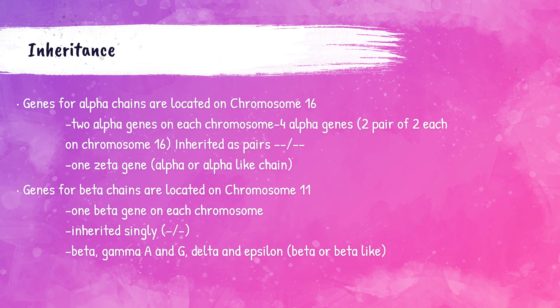There are alpha thalassemias, where the issue occurs on the alpha chain, and beta thalassemias, where the issue is on the beta chains. The genes for the alpha chains are located on chromosome number 16. There are two alpha genes on each chromosome, for a total of four alpha genes inherited as pairs. The genes for the beta chains are located on chromosome number 11, with one beta gene on each chromosome, inherited singly.